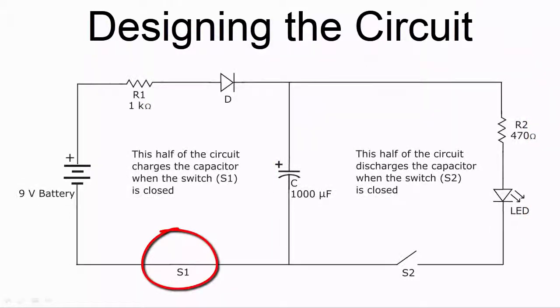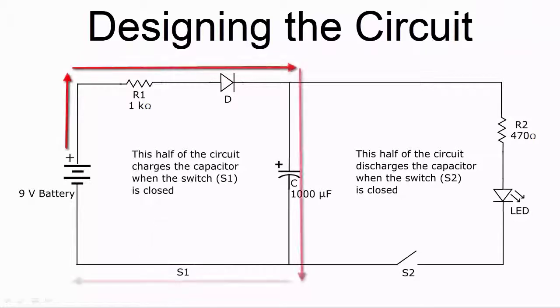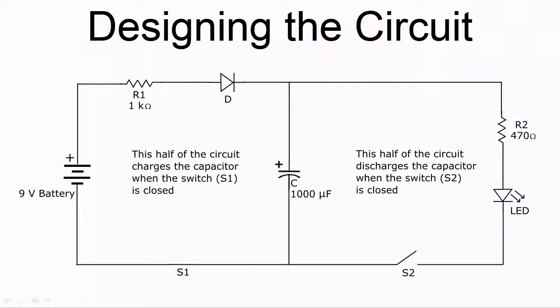When switch S1 is closed, current flows around the left hand side of the circuit and charges the capacitor. Once the capacitor is fully charged, current stops flowing around the circuit. This happens when the voltage across the capacitor is the same as that across the battery, about 9 volts.